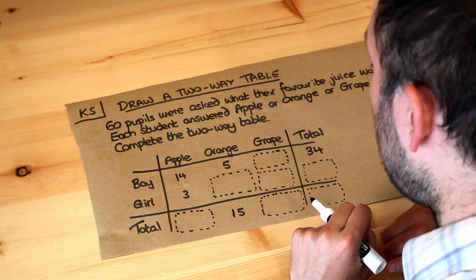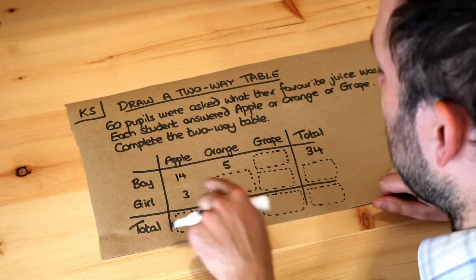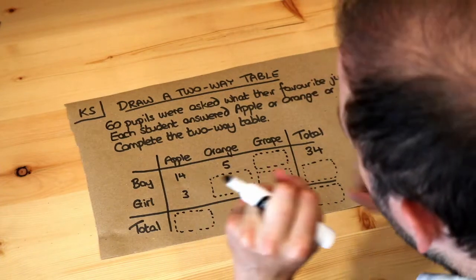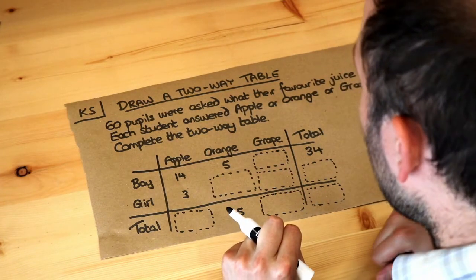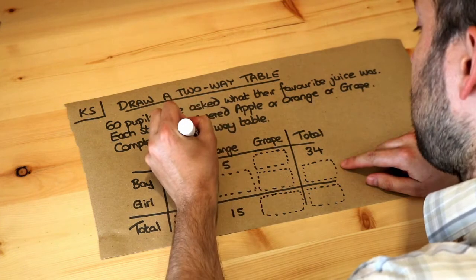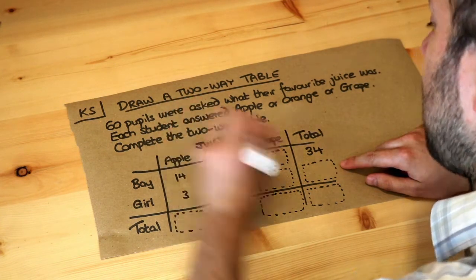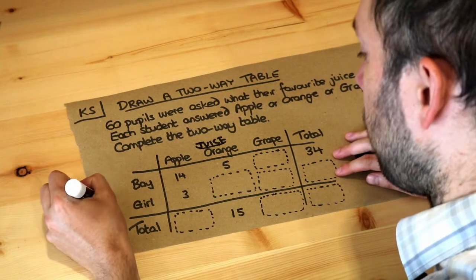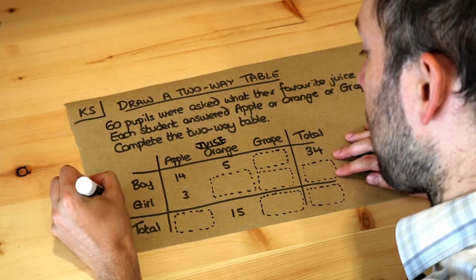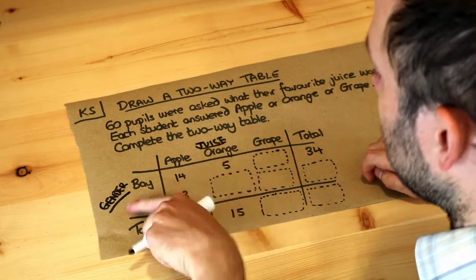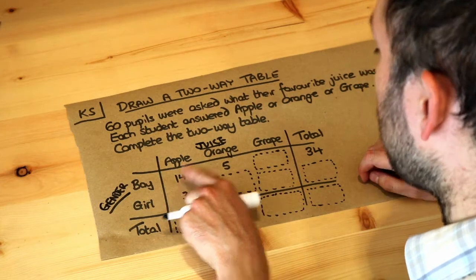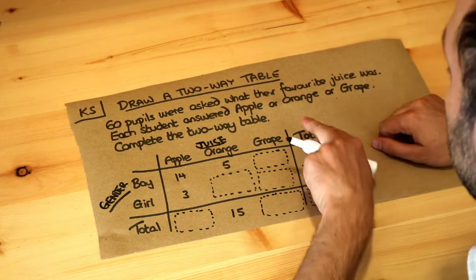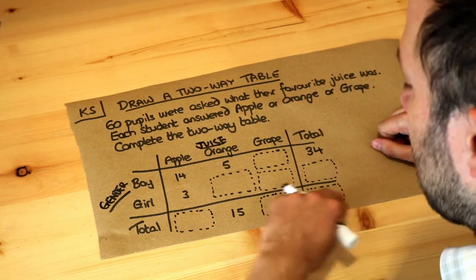A two-way table is for when we want to give the frequencies of things — how many of something we have — but where we have two different categories. We've got one category which is the juice that people had, and the other category is whether each person was a boy or a girl. People can be a combination of the two, so you could have a boy who likes apple, a boy who likes grape, a girl who likes orange, and you also have total columns and total rows.